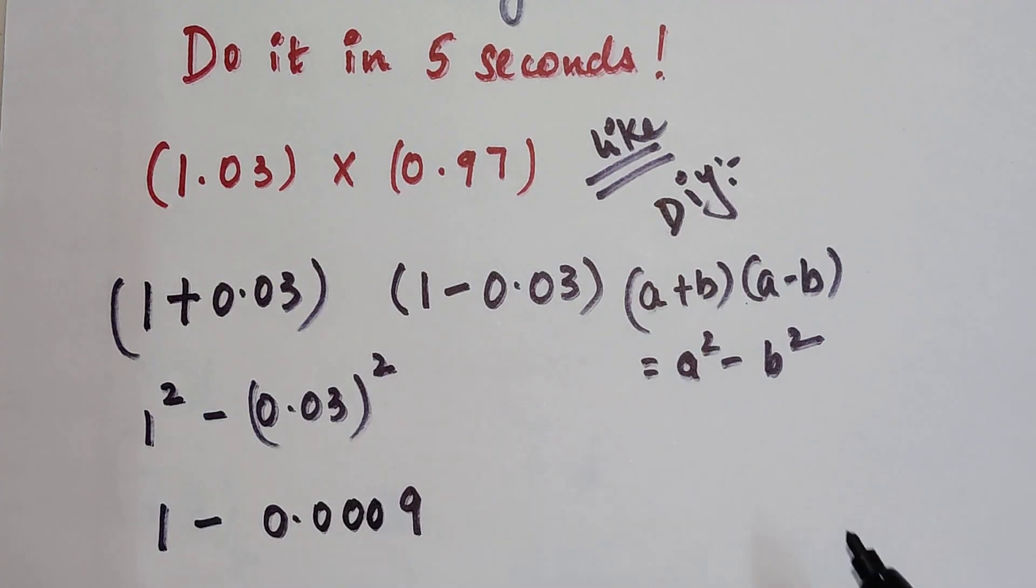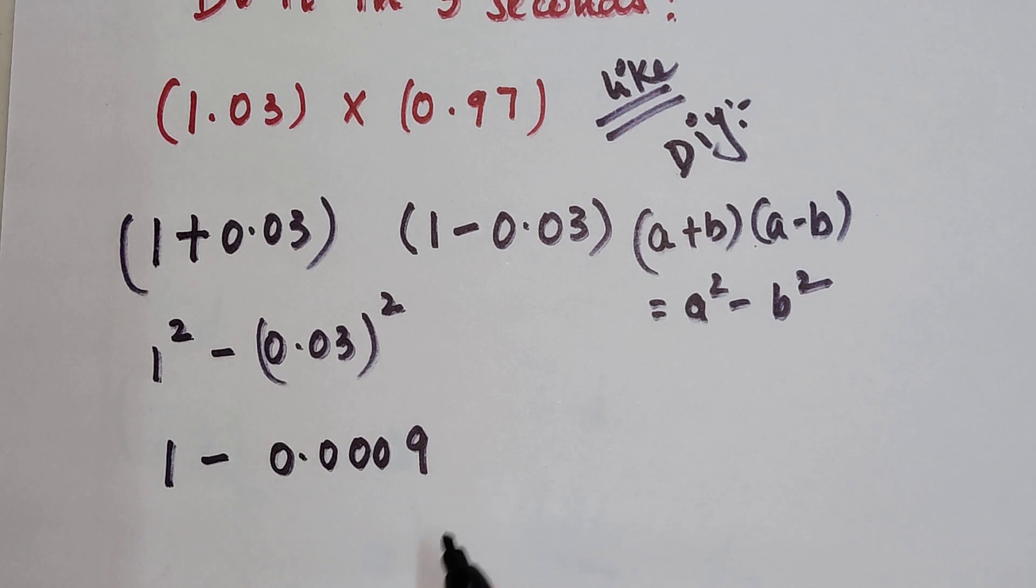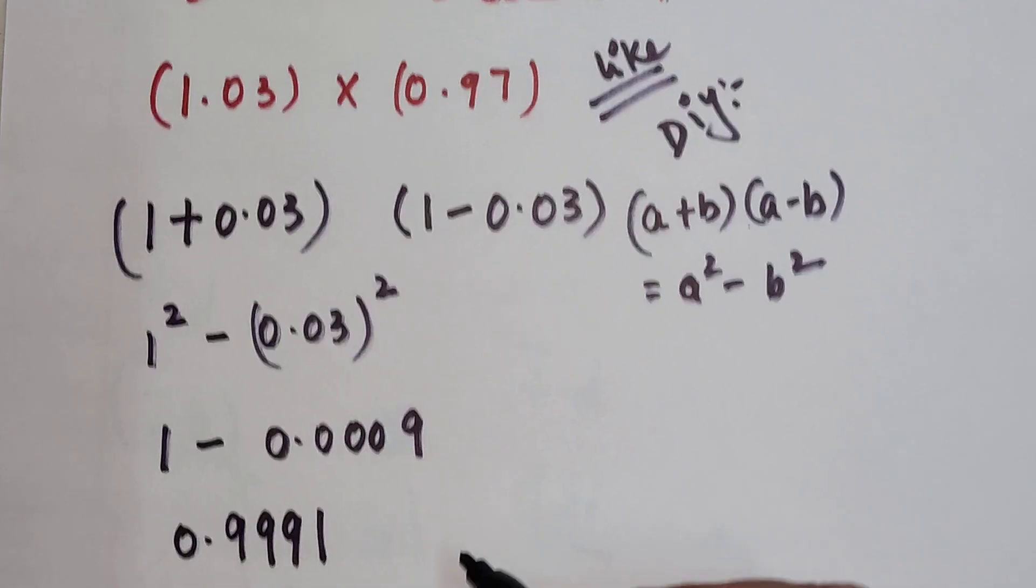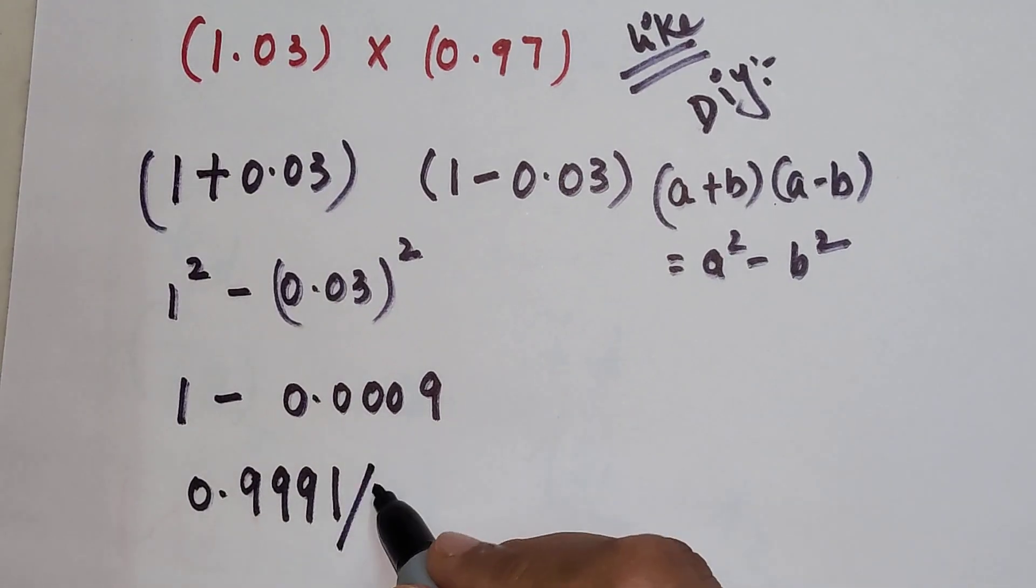0, 0, and 0. And when you subtract 1 from 0, sorry 0.0009 from 1, you get your final answer as 1, 2, 3, 9 for the 0 and 1 for this particular 9. So this is your answer.